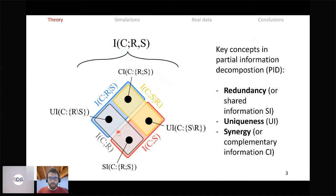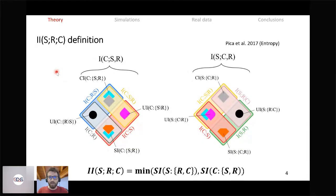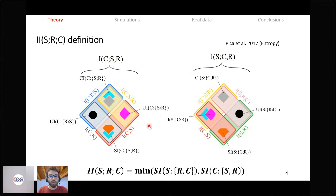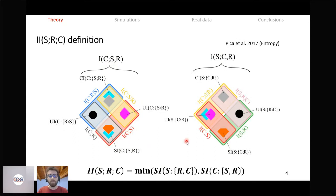From this we might be tempted to define intersection information as this atom — the information that neural response shares with the stimulus and at the same time regards the behavioral choice. But why isn't this really what we're looking for? We have to enlarge the perspective and consider two PID diagrams: one with choice as the target, and one with stimulus as the target. The information that stimulus shares with neural response appears in this other lattice. So if we want our measure to truly be a sub-part of the information between stimulus and neural response, choice and neural response, and stimulus and choice, we must take the minimum between these two atoms, which in general can differ.